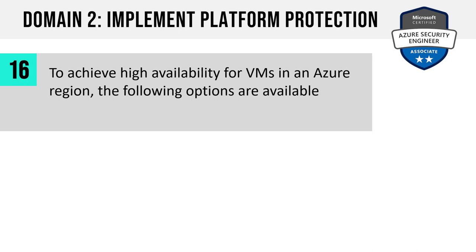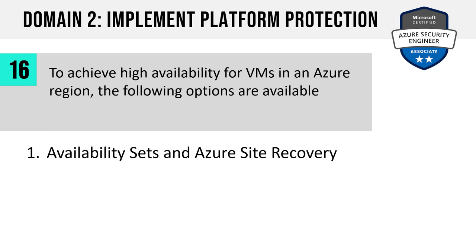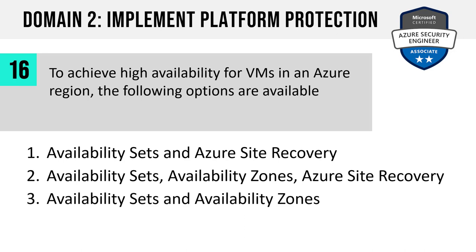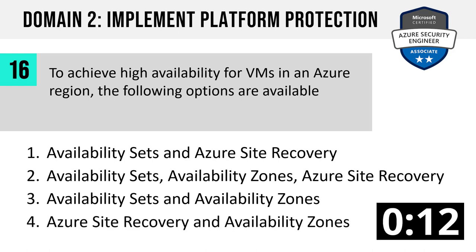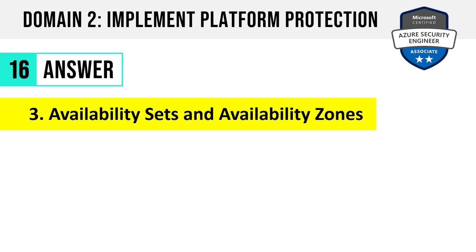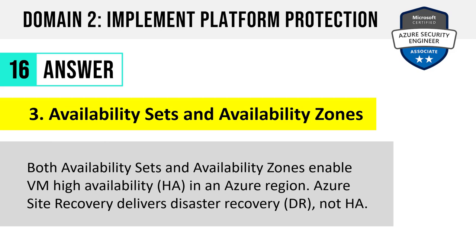Number 16. To achieve high availability for VMs in an Azure region, the following options are available: availability sets and Azure Site Recovery; availability sets, availability zones and Azure Site Recovery; availability sets and availability zones; or Azure Site Recovery and availability zones. The answer is three: availability sets and availability zones. Both give us high availability within the region. Azure Site Recovery delivers disaster recovery — DR, not HA.